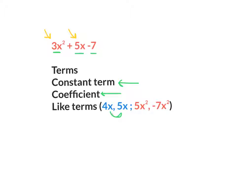4x and 5x are like terms. They both have x's, those are the first power. 5x squared, negative 7x squared are like terms because, again, they have the same variable and the same exponent. If you think about like terms, they're the kind of terms, the only kind of terms that you're allowed to add and subtract with each other. And that's what we're about to do.